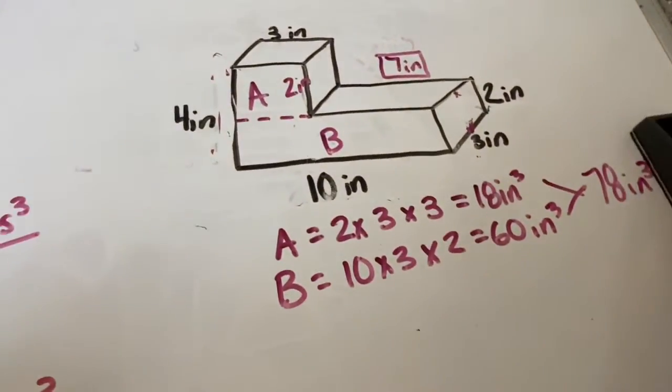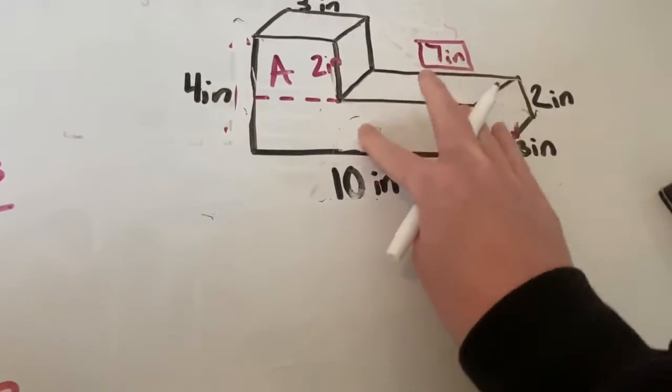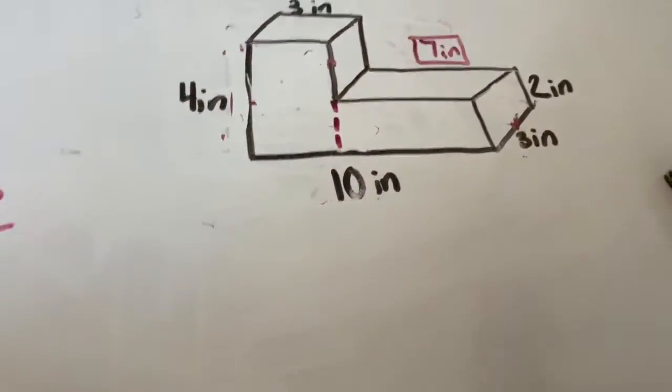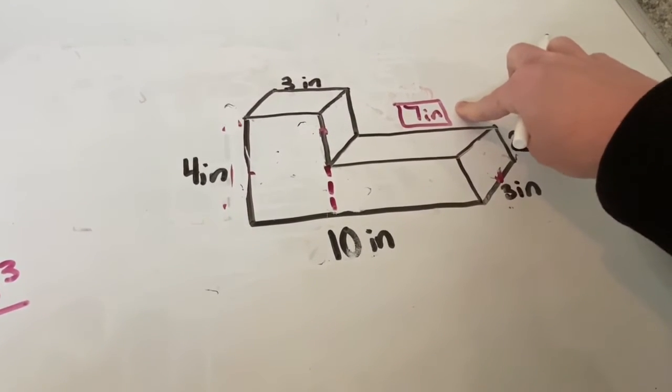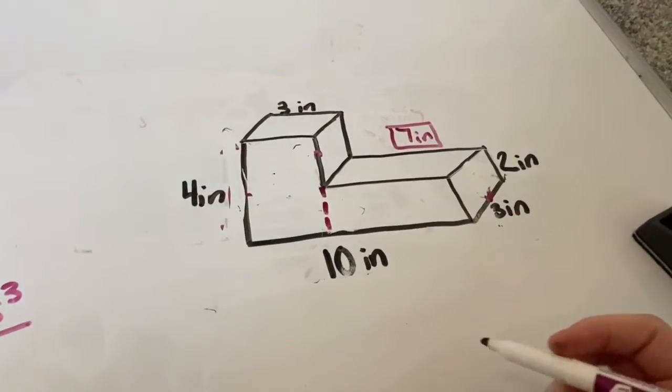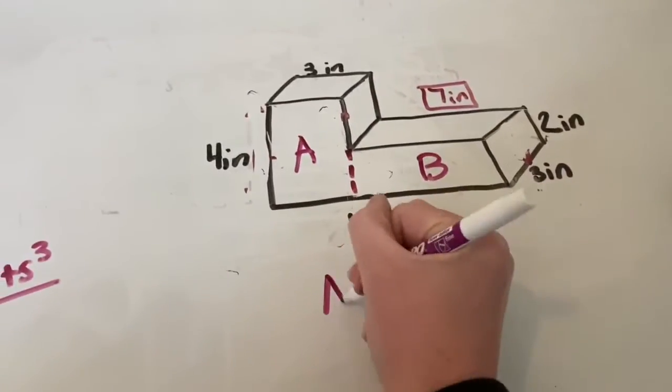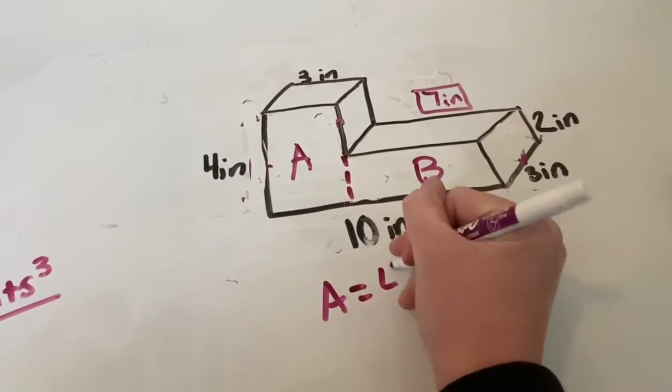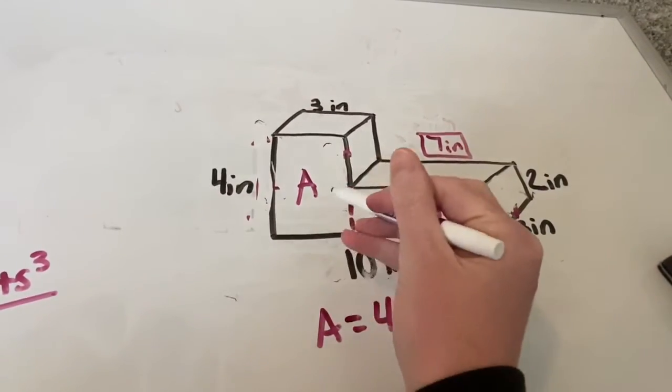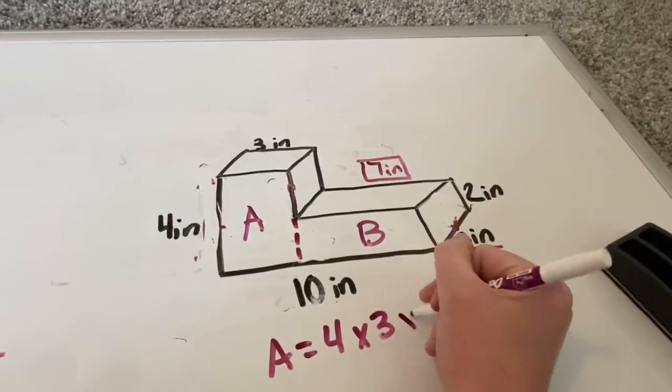Now let's see if this changes when we divide up our figure into a different way. So now I'm going to try my other way and separate it here. I can keep my seven over here because I already solved for that. And now I don't really need to think about the two because I know the whole height of that is four. So if I look at figure A and figure B, figure A, I'm seeing has a height of four inches. It has a width of three inches. And then I need to know how far back it goes. Again, I can just look right over here on the opposite side and see that it's three inches.